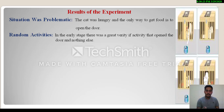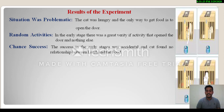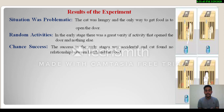As soon as the food was placed before the cat, in the initial phases it performed many different random activities. The success it achieved in this process was only chance success — accidental success. Third point is chance success: the success in the early stages was accidental and the cat found no relationship between the latch and the food. The cat was purely unable to establish a connection between the latch and the food initially.